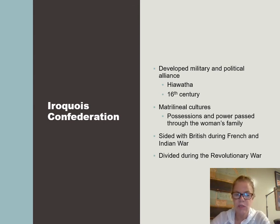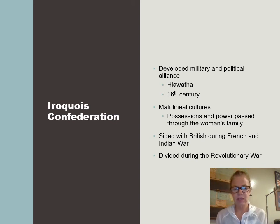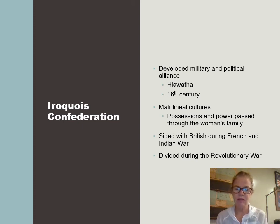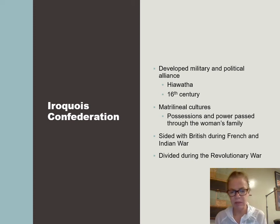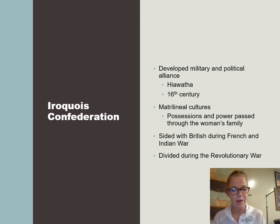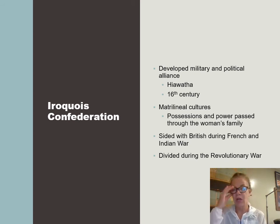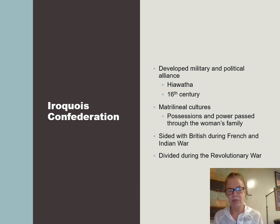Another group was the Eastern Woodlands — it was a confederation. All these Indians came together to form an alliance for military and political necessity. Hiawatha organized this in the 16th century. One thing about them is they traced family lineage through the mother — it was a matrilineal culture. This is a very important group because they allied with the British during the French and Indian War, but also allied with the British during the American Revolution and they lost, so after the Revolution they lost a lot of territory. After the French and Indian War, the British had protected their land, which is why they joined the British against the Americans.